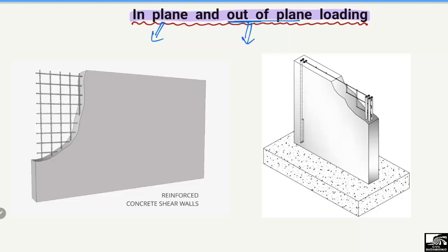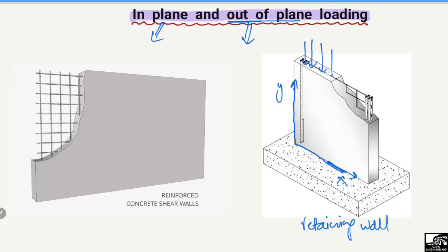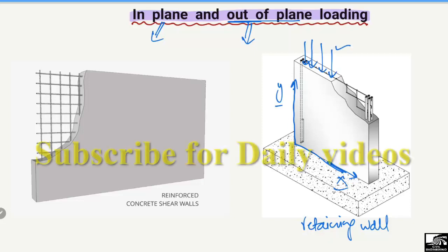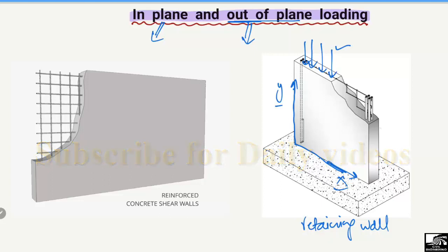To explain these two in real life, consider a retaining wall. This is the right-side view and this is the plan of our retaining wall. This is the x-axis and this is the y-axis — these two axes make the plane of our wall. Now if the load acts in the vertical direction, along the y-axis, then since the y-axis is part of the plane, this load is in-plane loading.